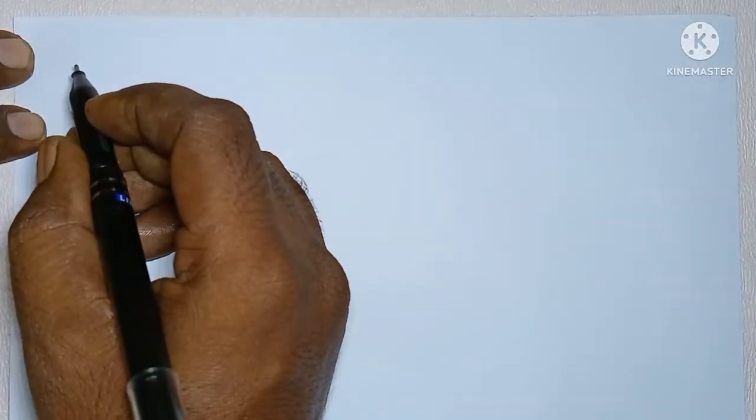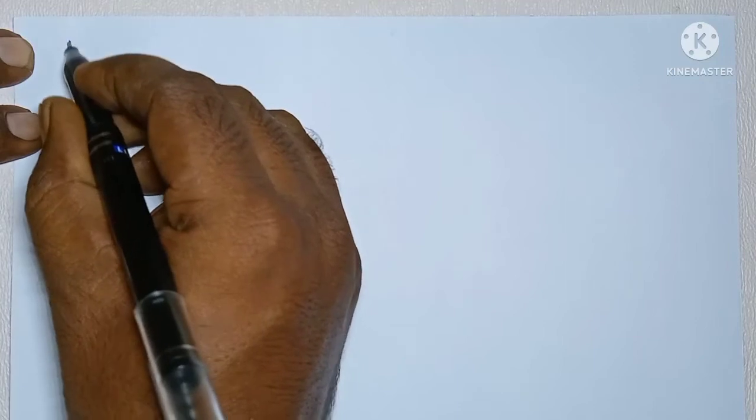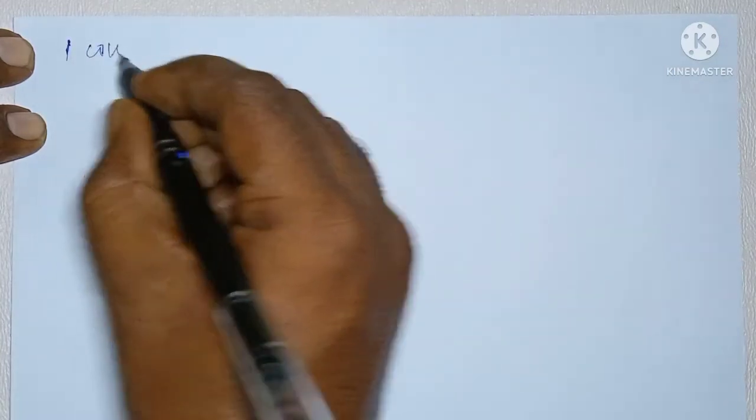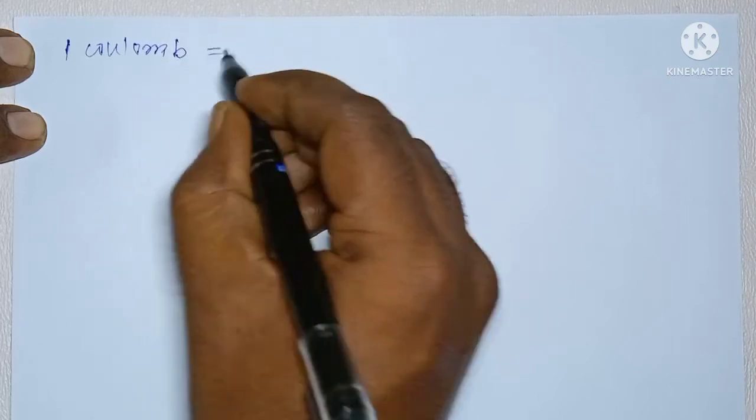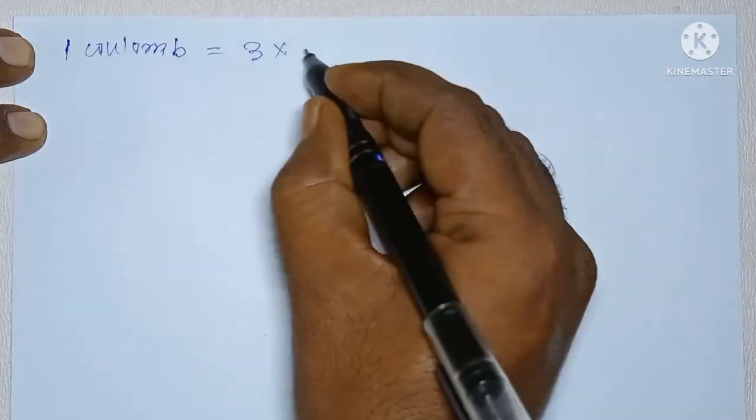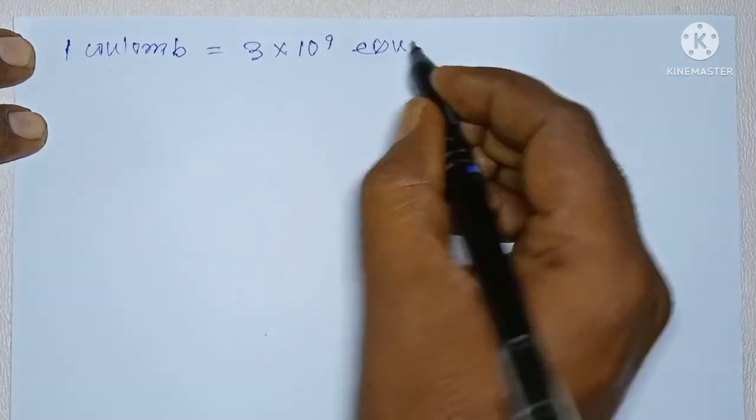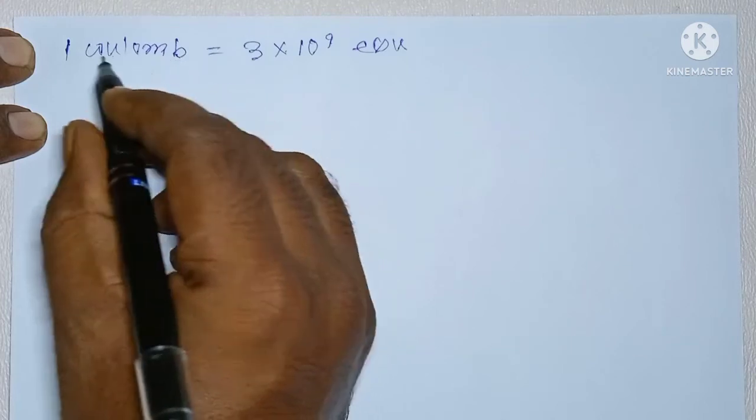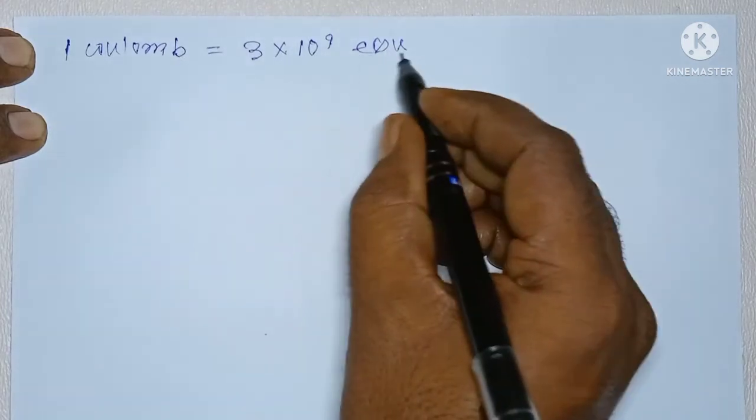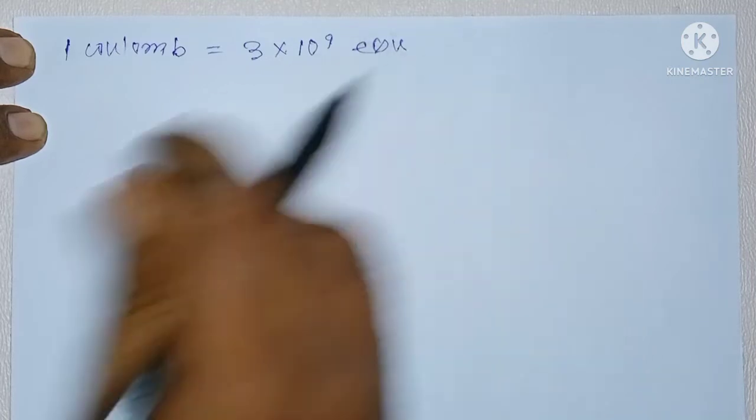This video is for those who get in confusion to prove that 1 coulomb equals to 3 into 10 to the power 9 ESU. 1 coulomb is the unit of charge in SI unit system whereas ESU is the unit of charge in CGS unit system.